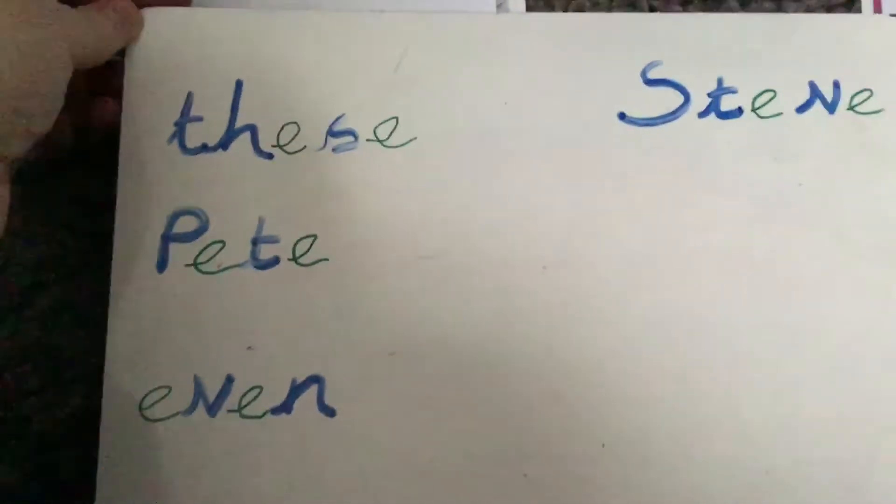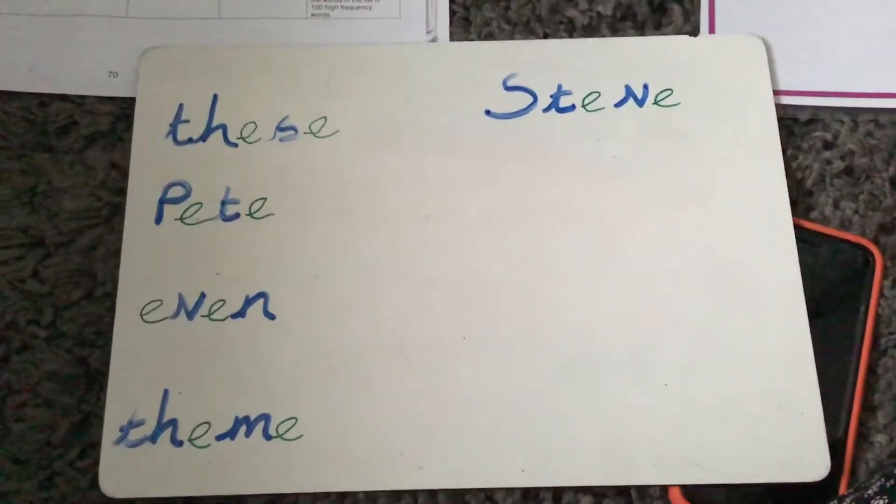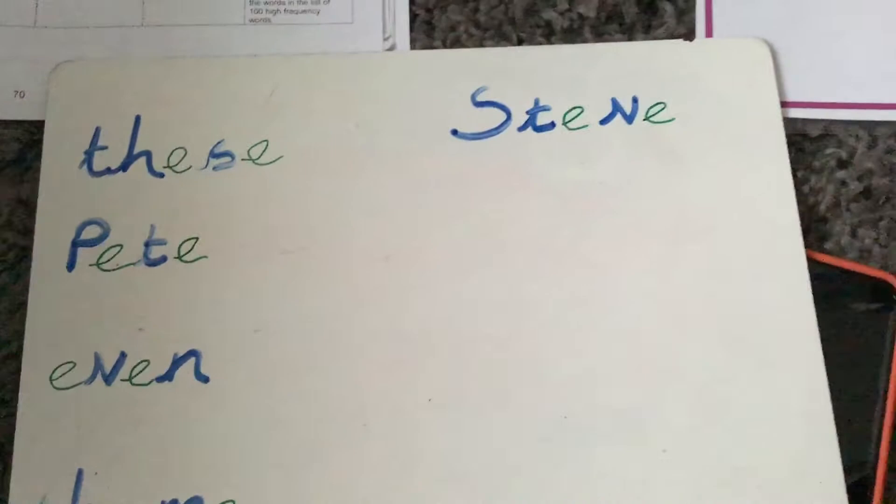And we've got some words with the E split digraph. Here we go. Let's see if you can read them before I get to them. And the mouse can say go, have a go. So let's read them together. Let's have a little look then. Let's do orange.